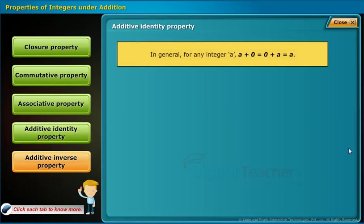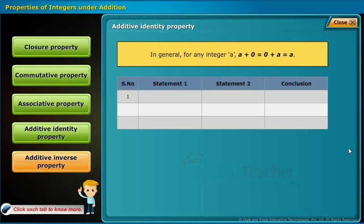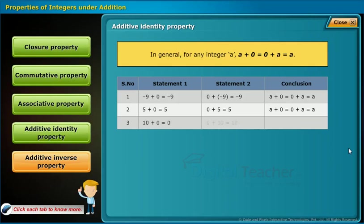Additive identity property defines that for any integer A, A plus 0 equals 0 plus A equals A. For example: minus 9 plus 0 equals minus 9, and 0 plus minus 9 equals minus 9. The same holds for the second and third statements. Therefore, the table follows additive identity property under addition.